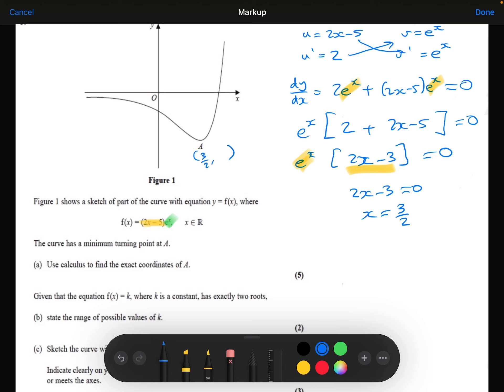So that's the x coordinate. If I now take that and substitute 3 over 2 into the original function, then I find that the y coordinate is going to be minus 2e to the 3 over 2. So this is the answer to part A.